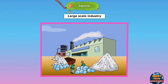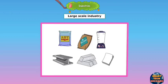Textile industry is one of the largest industries in India. India is one of the leading producers of cotton and textiles in the world. India has many other large-scale industries such as sugar, paper, electronic goods, fertilizers, and so on.